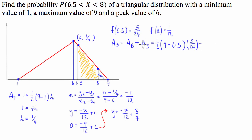And from that, we're going to subtract the area of the small one, which is, again, half base times height. A half, the base is 9 take 8, and the height on this one, the function at 8, is 1 over 12. And from that, we get the probability of the random variable distributed between 6.5 and 8 equaling 7 over 32.